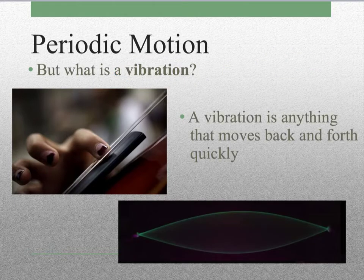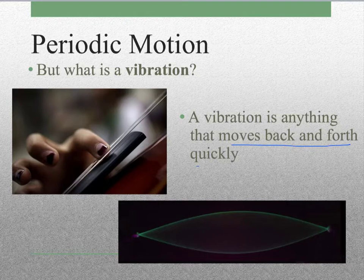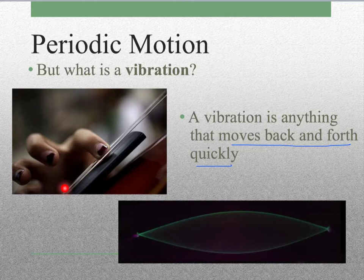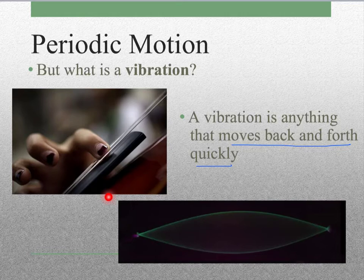So a vibration is just anything that moves back and forth quickly. So this example here, I have somebody plucking a string on a violin. And if you're familiar with a violin or any stringed instrument at all, you know if you pluck it, it's going to vibrate back and forth. And you can actually see that when you pluck the string.